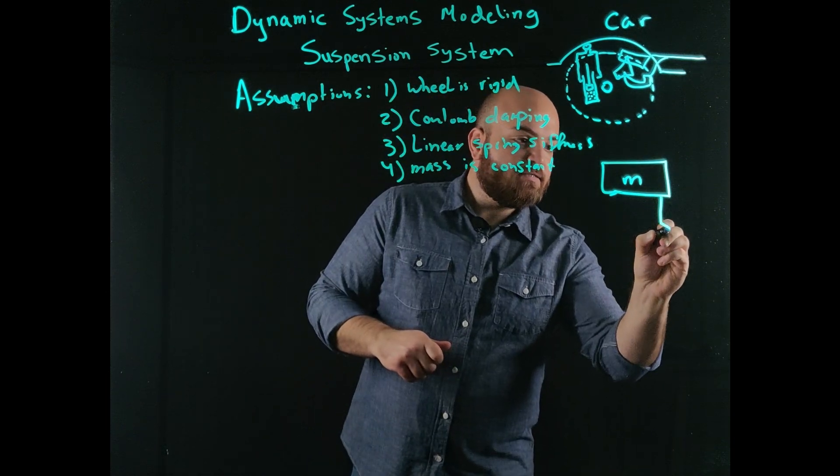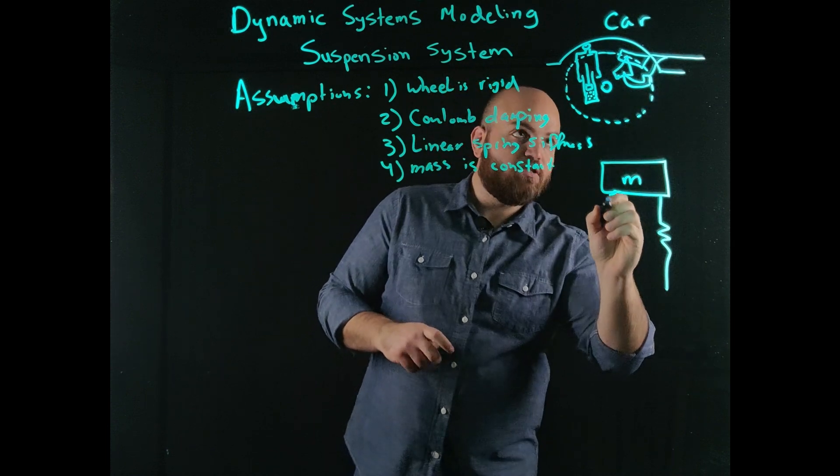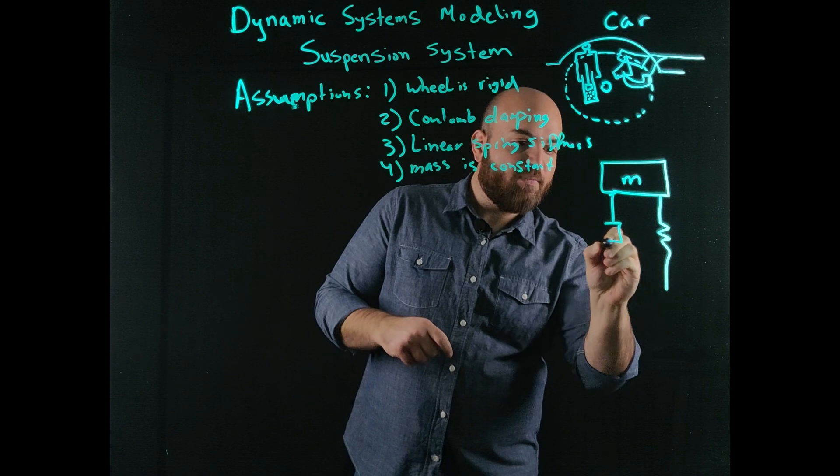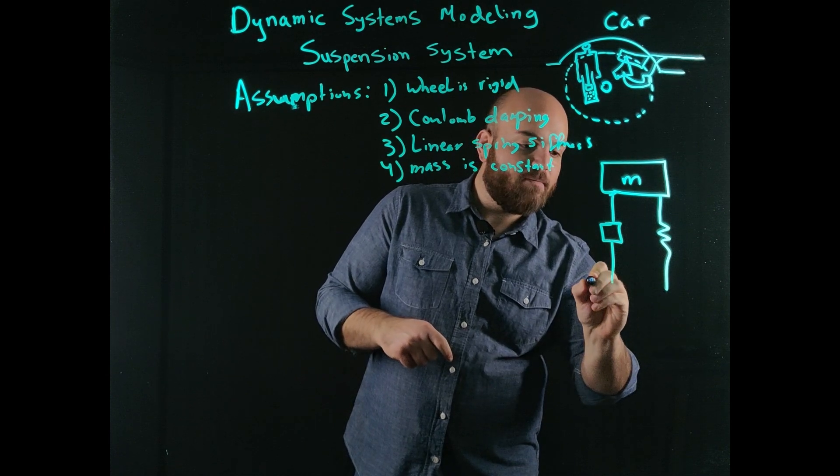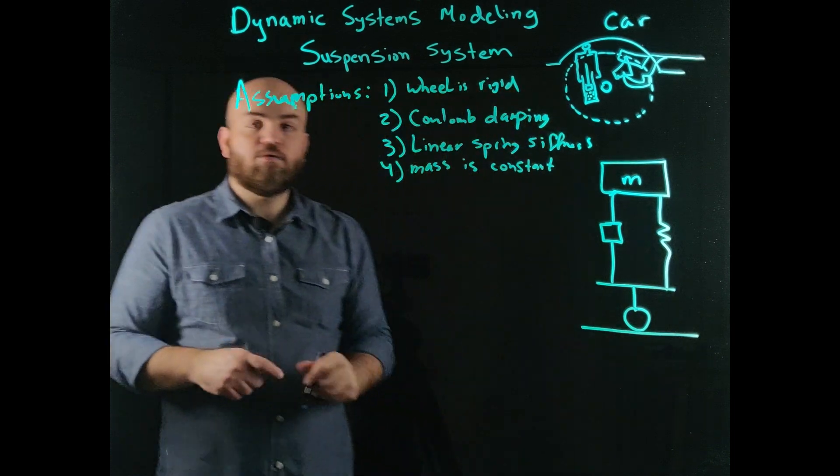Connected to this mass is this spring, which is my suspension, you know, wishbone or leaf or whatever it is. And I have my damping. And those are both connected to this wheel that is on the ground.